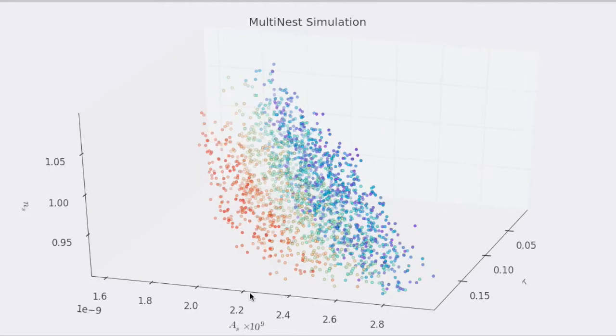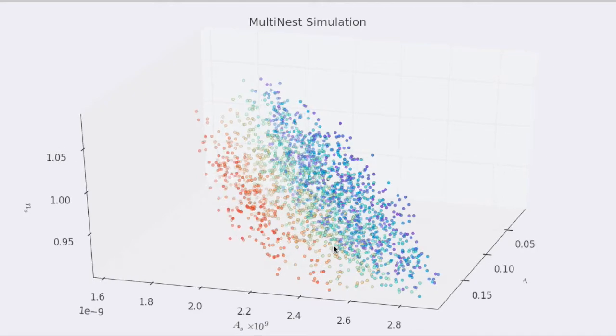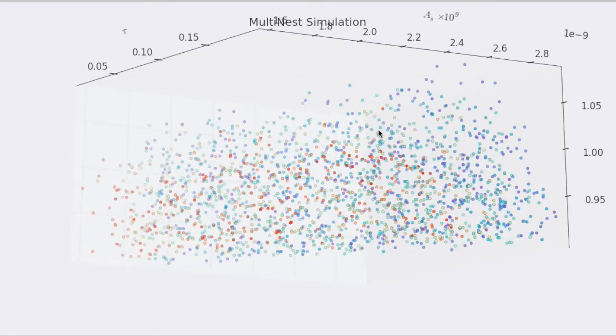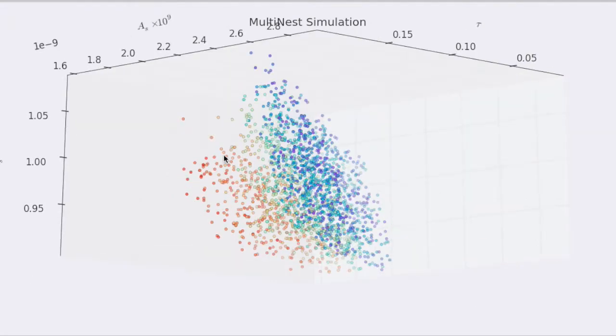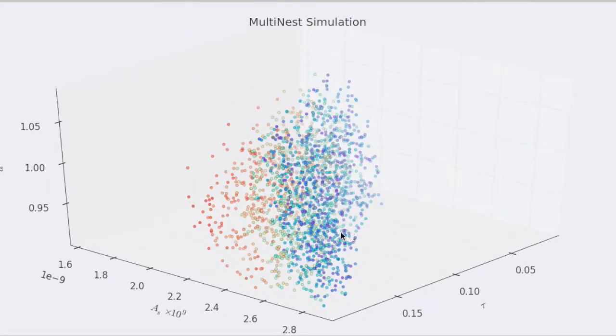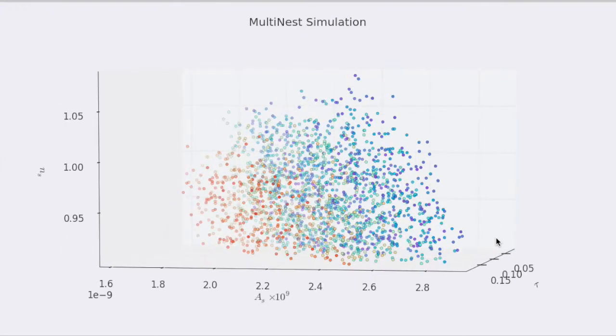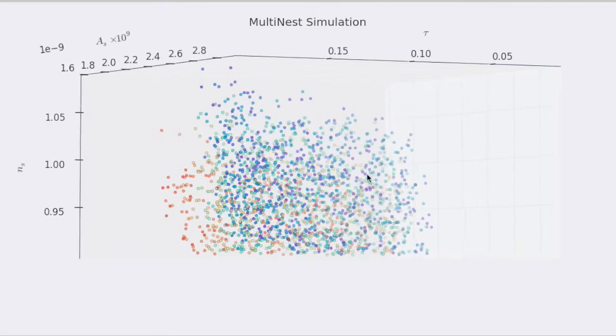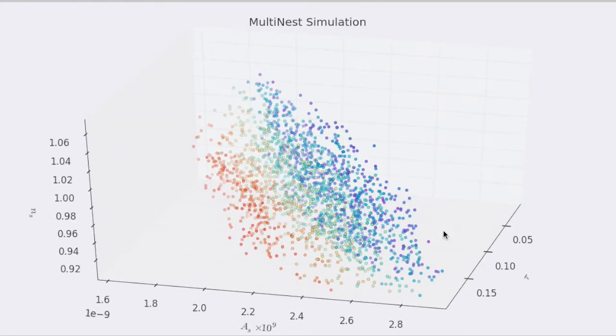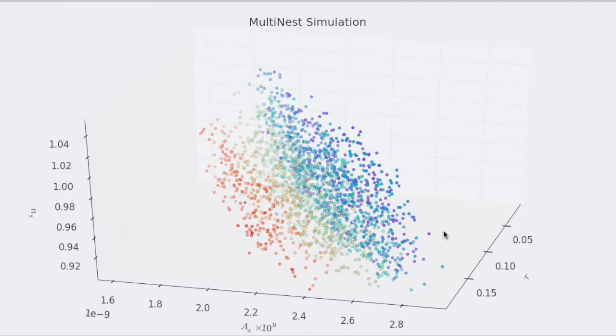The way the MultiNest works is it takes a single point, the least likely point that it has in the parameter space at that time. It throws it out and then it continually evaluates points in the parameter space until it finds a point that has higher likelihood than the point that you just threw out. And it does this continually until it evolves to smaller volumes of the parameter space.